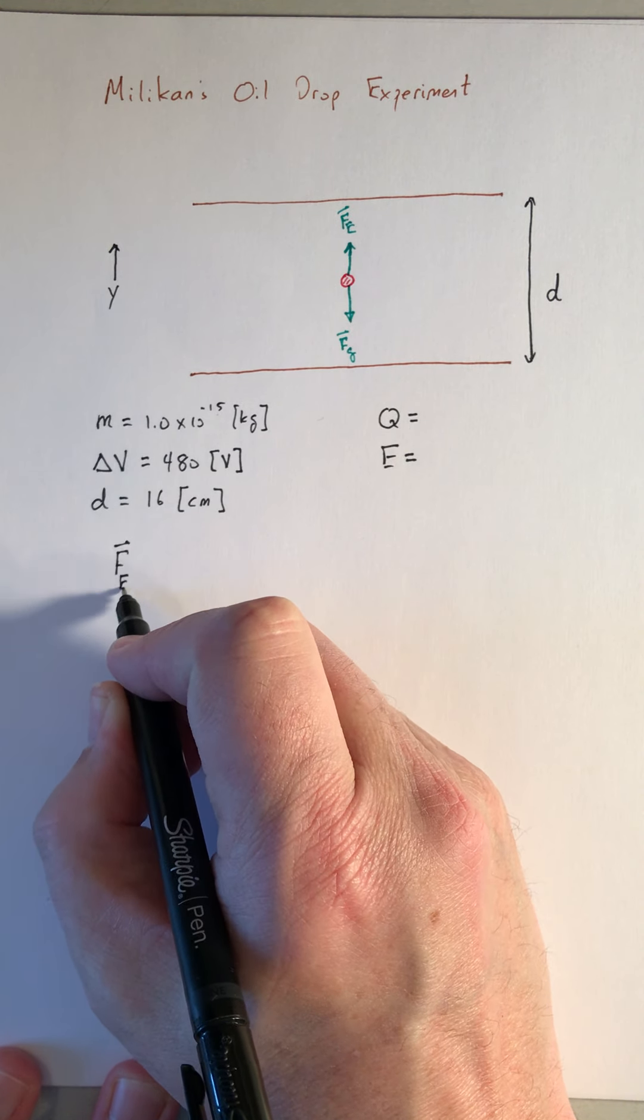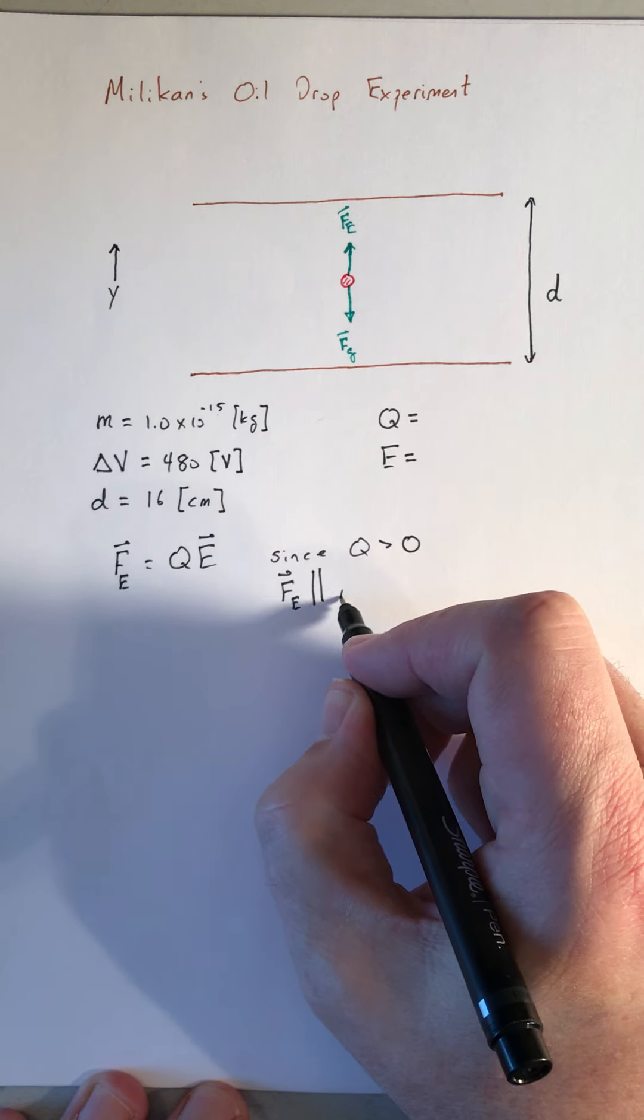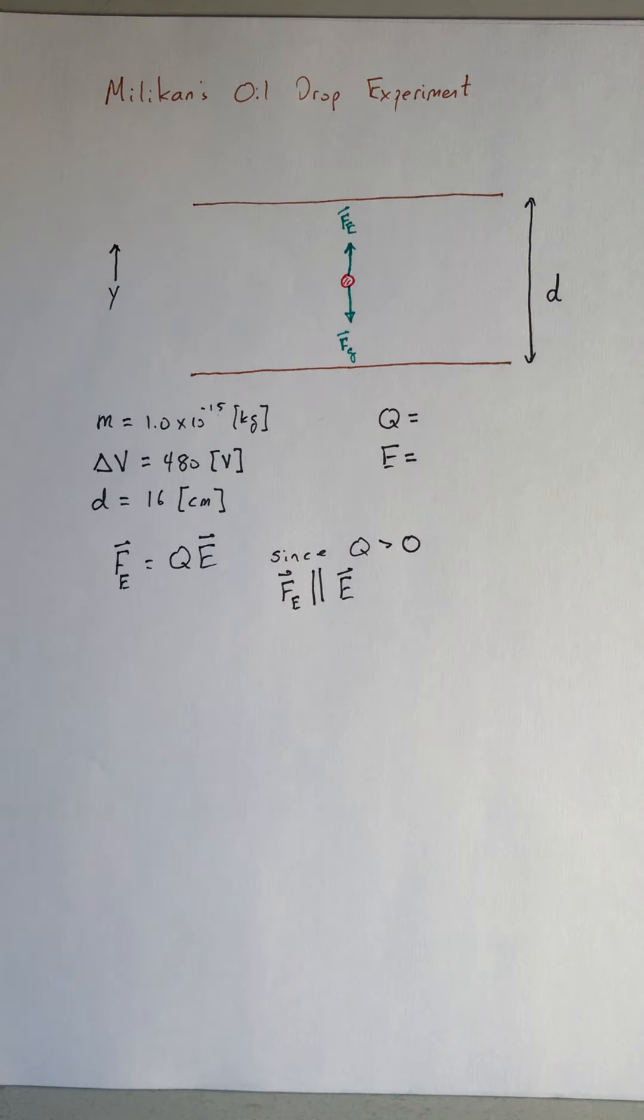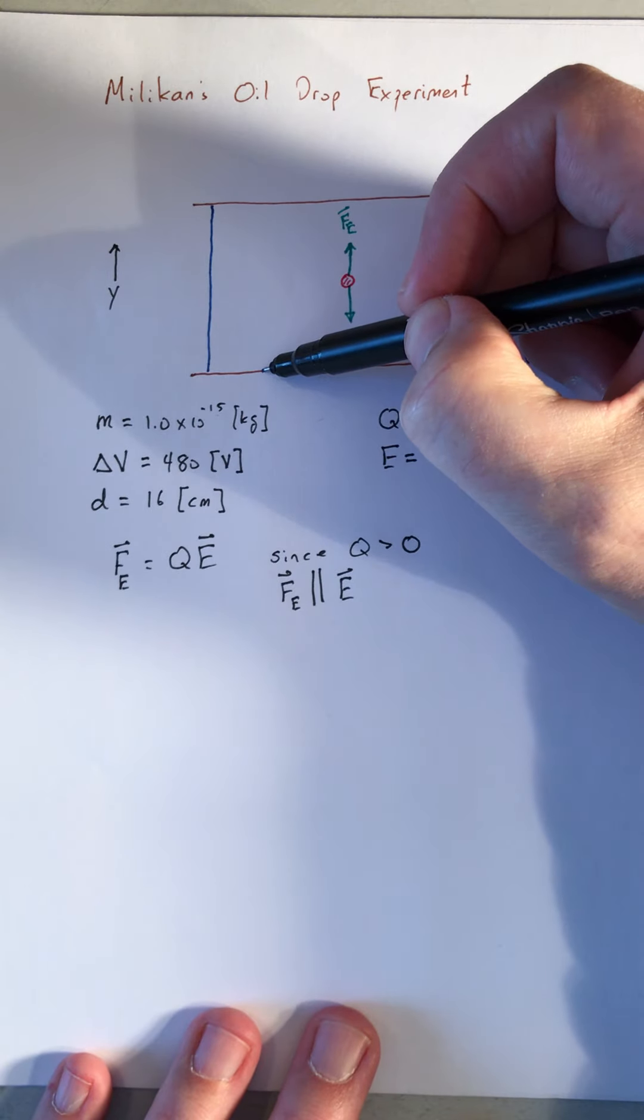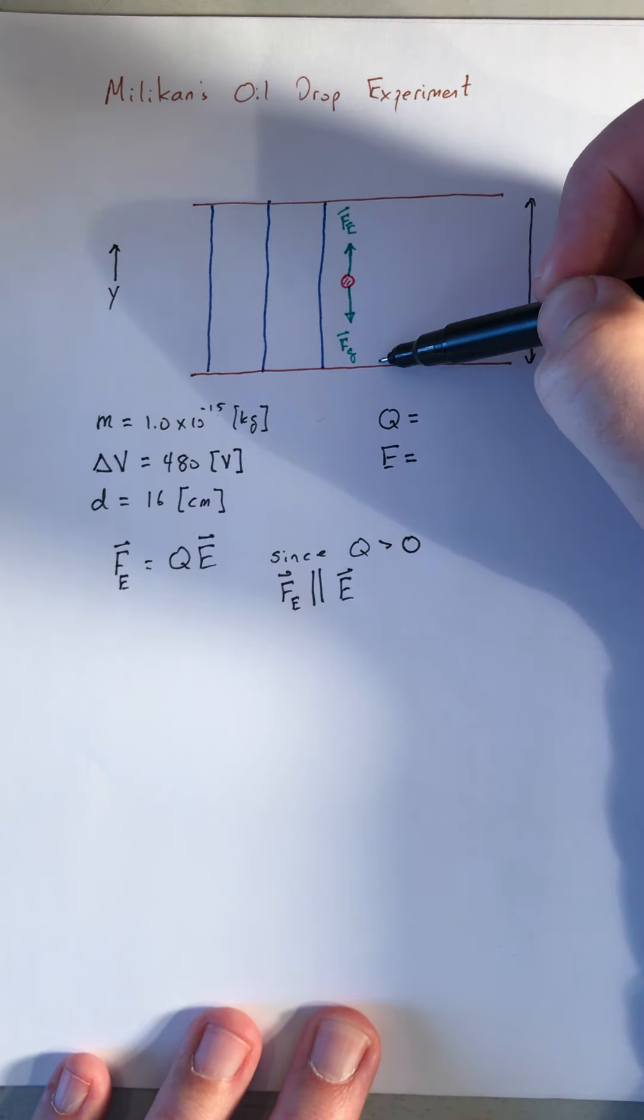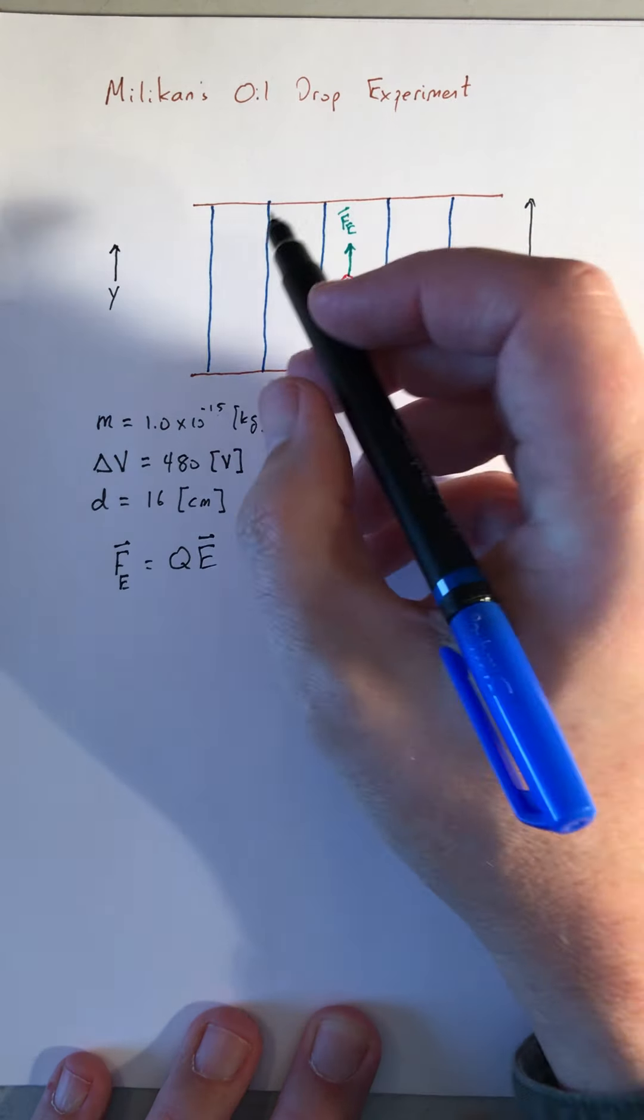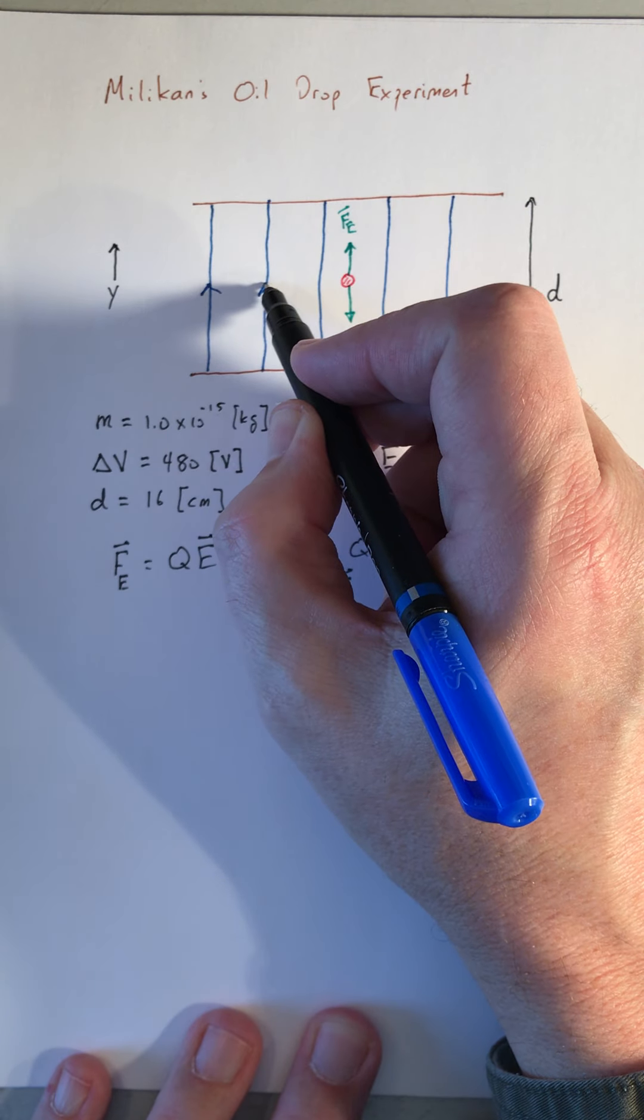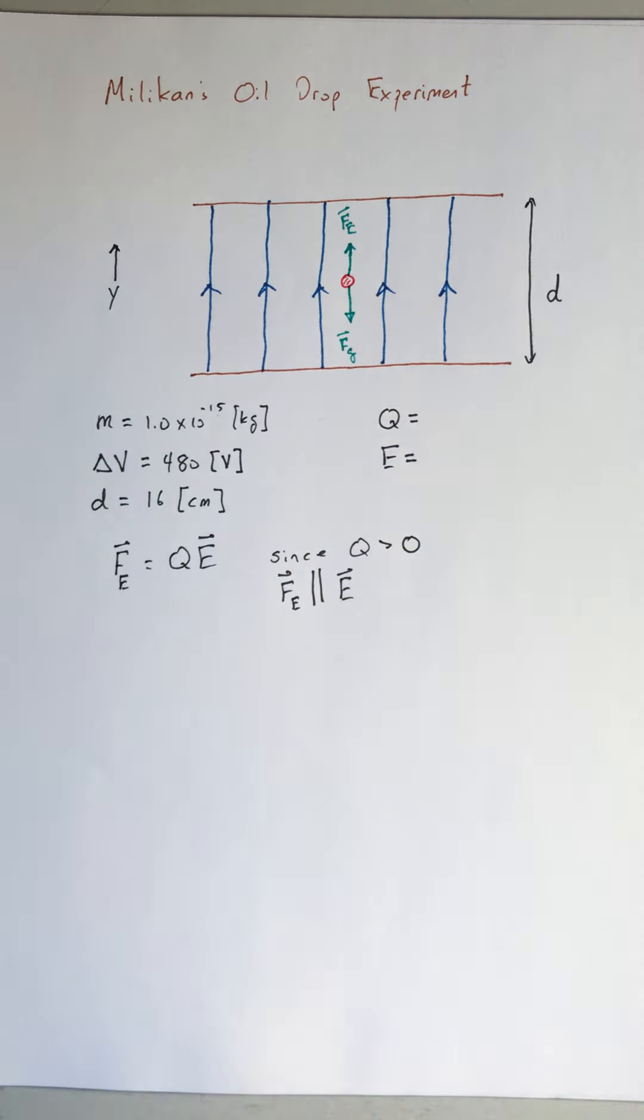Since Q is positive, the Coulomb force is going to be parallel to the electric field. So I can go ahead and put in some electric field vectors, or field lines rather. So Milliken's oil drop is like a parallel plate capacitor, so I'll draw some field lines that are uniformly spaced and parallel to one another. And they're all field lines that point up.